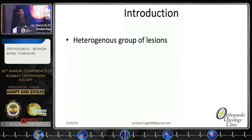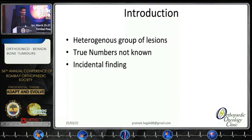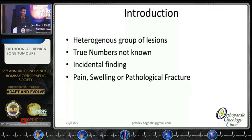It is a heterogeneous group of lesions, very difficult to define as a single entity or keep individual tissues. The true numbers of these benign bone tumors are not known since many of them are an incidental finding and do not give trouble. Very rarely they might present with pain or swelling, and sometimes they present with a pathological fracture due to weakening of the bone.